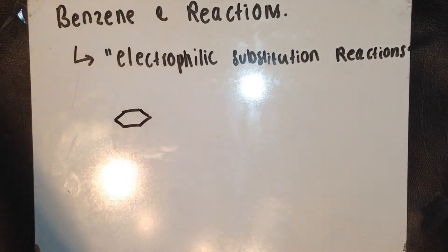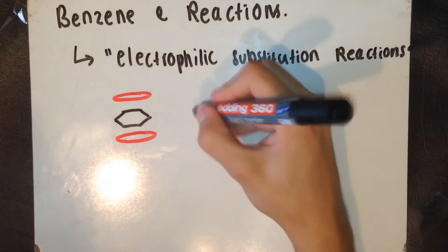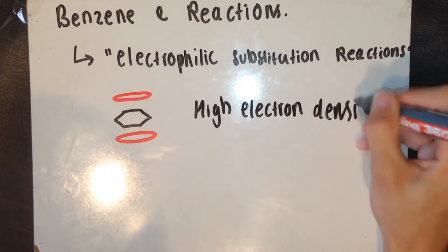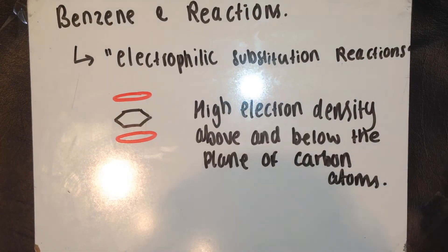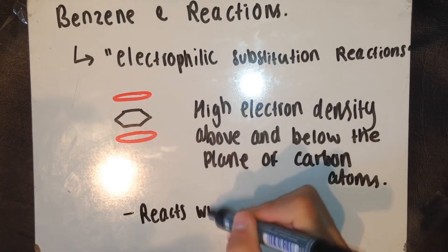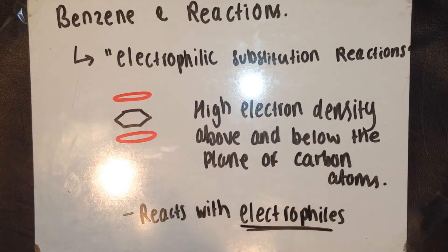As you know, benzene has a high electron density above and below the plane of carbon atoms. This allows benzene to attract and react with electrophiles. More specifically, the electrophiles are attracted to the high electron density.